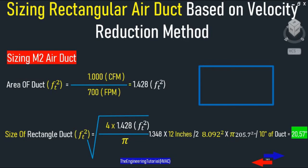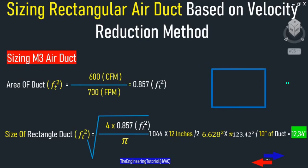So if you divide 205.7 square inches over 10 inches height you get 20.57 by 10 inches. For M3: 600 CFM divided by 700 FPM, square root of 4 times 0.857 divided by pi, times 12 inches divided by 2 squared times pi — that gives us 123.4 square inches. So 123.4 square inches divided over 10 inches height gives 12.34 by 10 inches.